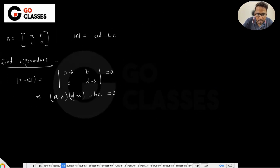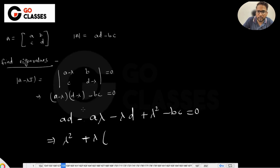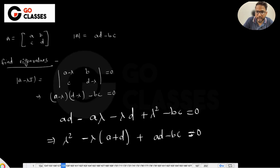Expanding (A minus lambda)(D minus lambda) minus BC equals 0, we get: AD minus A*lambda minus lambda*D plus lambda squared minus BC equals 0. Rewriting this as: lambda squared minus lambda(A plus D) plus (AD minus BC) equals 0.